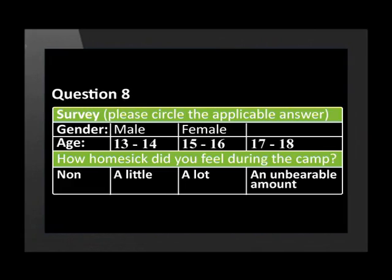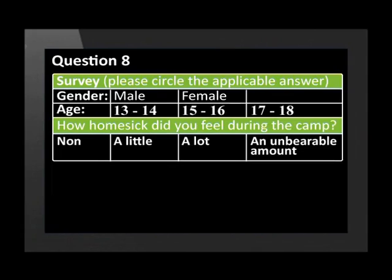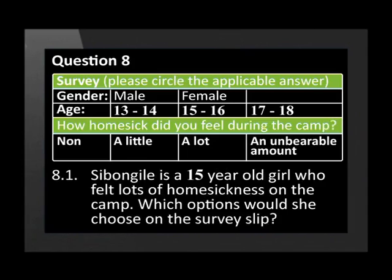Now for our last question about data handling — this is quite a complex question but very interesting. Let's see how you do. Question eight. A group of learners went on a school camp for a week. At the end of the camp they were given a survey slip. Siwangile is a 15-year-old girl who felt lots of homesickness on the camp. Which options would she choose on the survey slip?